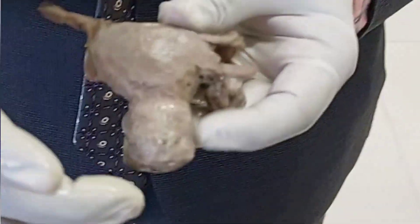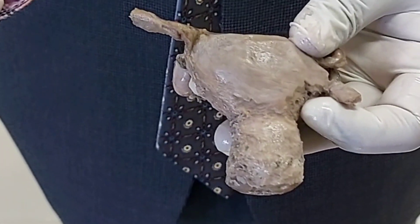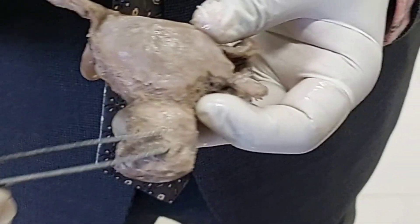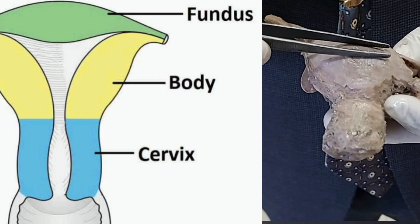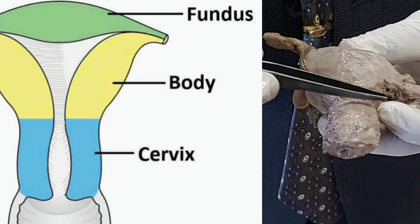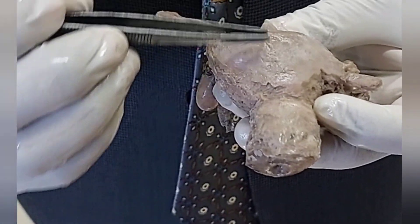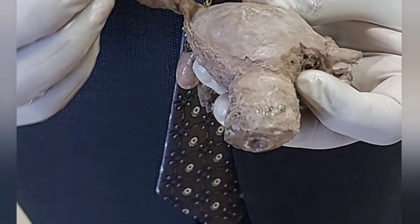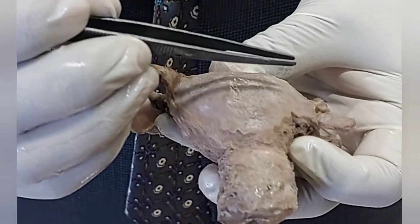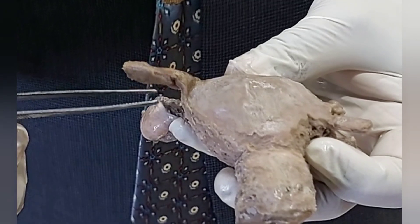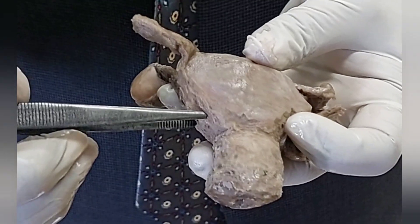I will show you one by one. First of all, let us see the parts of the uterus and how to hold this specimen in anatomical position. The uterus has three parts: the uppermost part is the fundus, which is solid inside with no cavity, and below that is the body. The dimensions of the uterus are three inches, two inches, and one inch — that means length is three inches, breadth is two inches, and thickness is one inch.